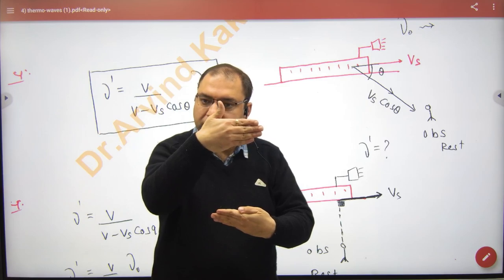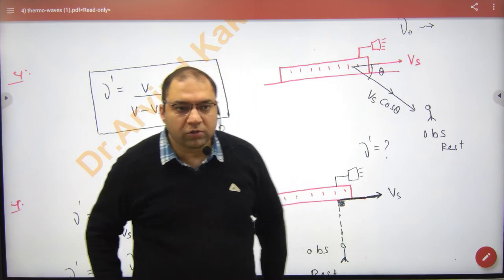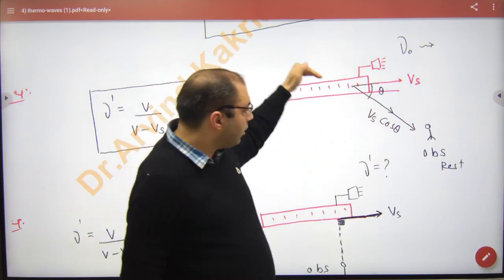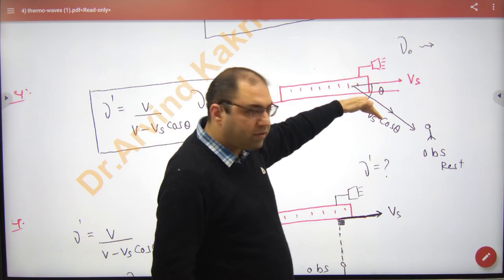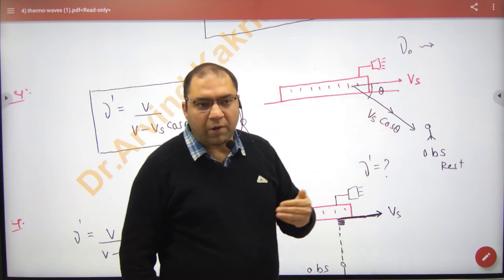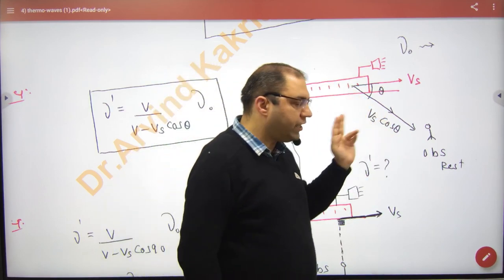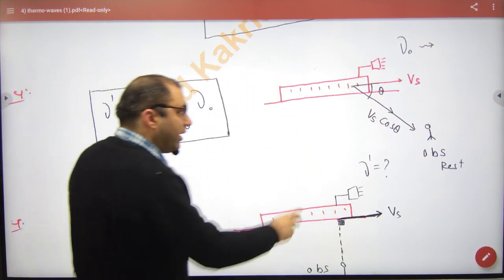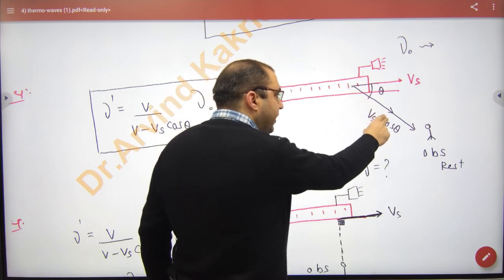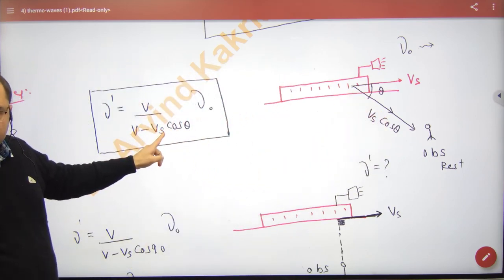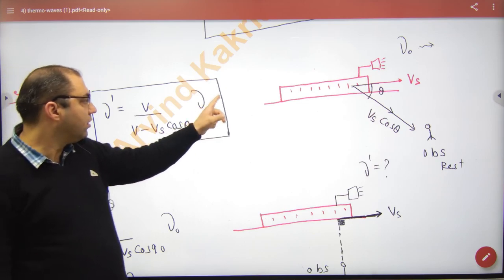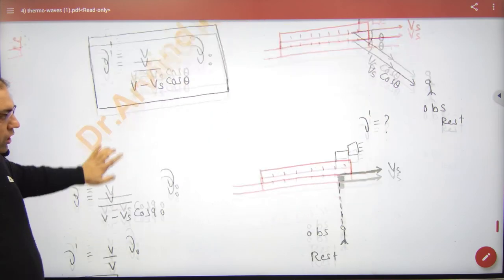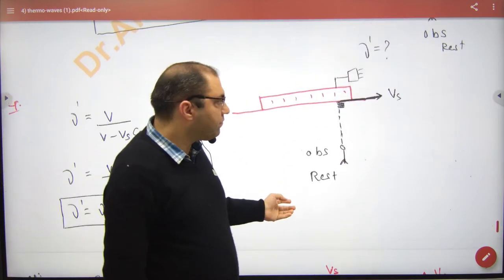This is important and was not done before. If the observer is somewhere and the source is somewhere, we have to take the component of the source velocity along the observer, which is vs cos θ. So we have to do the calculation with vs cos θ. The formula now uses vs cos θ into mu not.